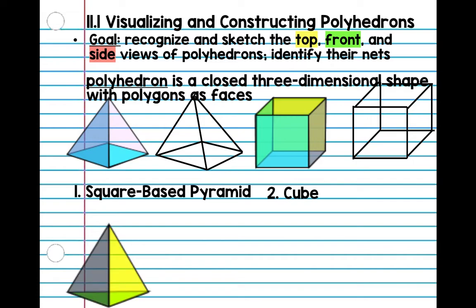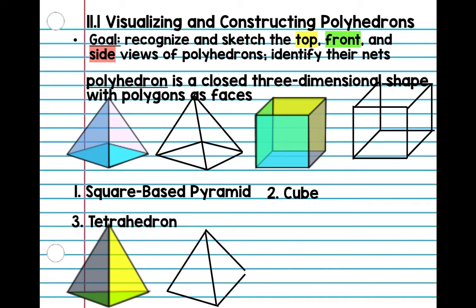Number three looks kind of like a square base pyramid, but instead of five faces, there's only four. So the prefix 'tetra' means four. So this polyhedron is called a tetrahedron — four faces. Just like drawing the pyramid, you're going to make the top, but instead of going one-two you're just going to go a straight line across. Tetrahedron.